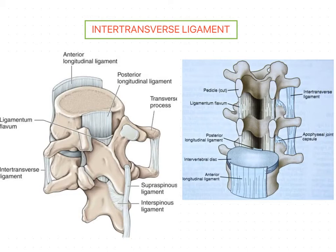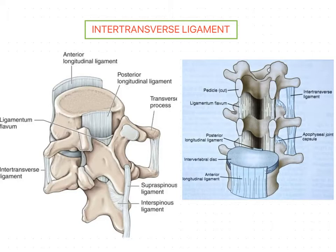Welcome back. In the previous session we discussed about ligamentum flavum, and now in this session we are going to discuss about the inter-transverse ligament. This inter-transverse ligament is one of the ligaments considered under intra-segmental ligaments of the system of the spine. This is an intra-segmental ligament, meaning the ligament which is present within the mobile segment or in between two adjacent vertebrae.